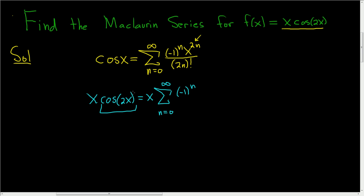We still have (-1)^n. Instead of x, we have 2x, so it'll be (2x)^(2n). All of this is divided by (2n)!.